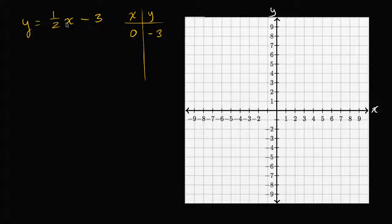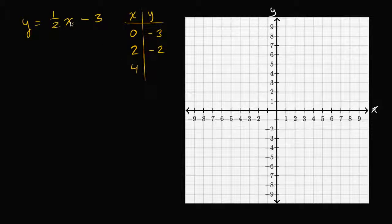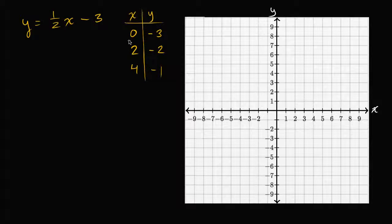Let me try x is equal to two, because then one half times two is just going to be one. So when x is equal to two, you're going to have one half times two is one, minus three is negative two. When x is equal to four, one half times four is two, and then minus three is negative one. We could keep going, but all we need is two points for a line, so we're ready to plot this line.